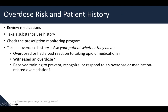To continue assessing for overdose risk, always review all medications and take a substance use history starting from the drug of initiation, which often occurs in adolescents. Always check the prescription monitoring program or controlled substance database. Always take an overdose history — ask your patient whether they have overdosed or had a bad reaction to opioid medications, whether they've ever witnessed an overdose, or if they've received training to prevent, recognize, or respond to an overdose or medication-related over-sedation.